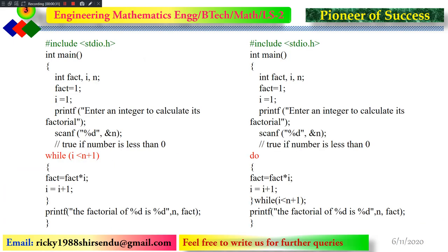In this slide, we have taken two different kinds of loops to calculate the factorial of a number. The first one is the while loop and the second one is the do-while loop. Both will give you the same value, but in different cases we may require different loops, and that is why we have to learn about all the loops.